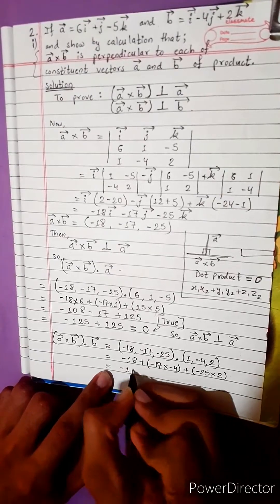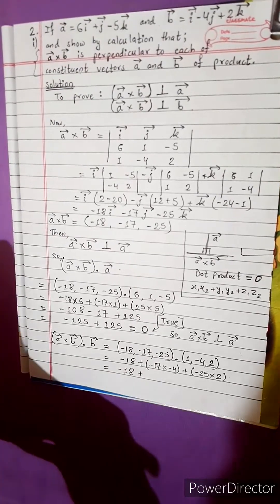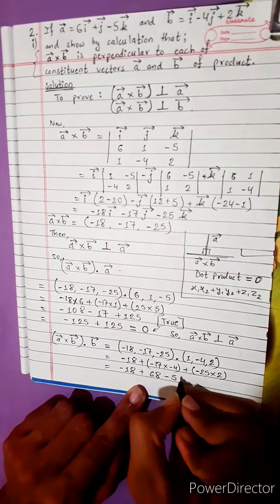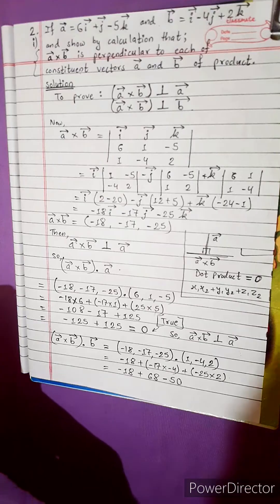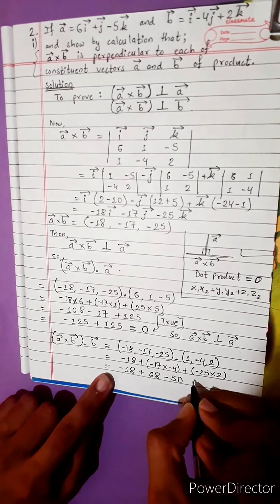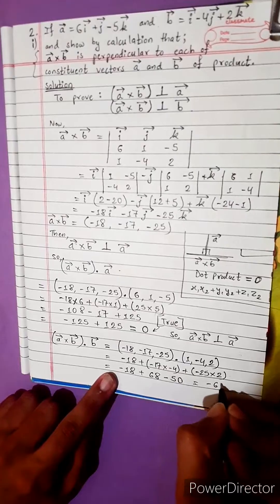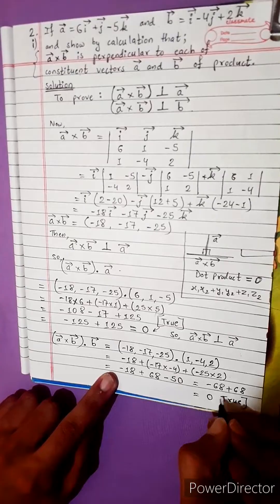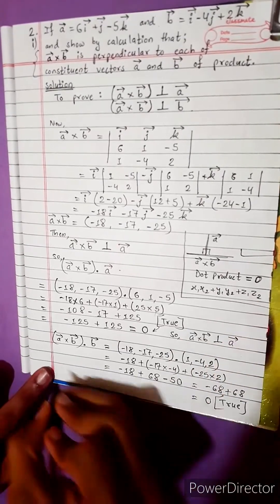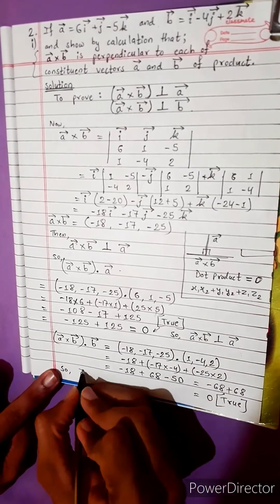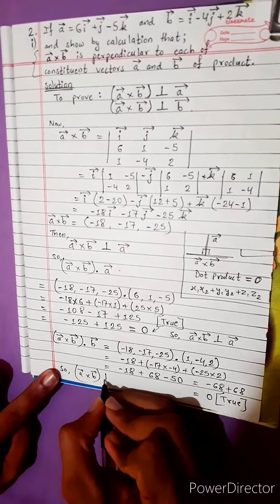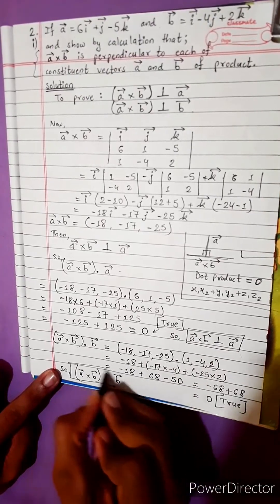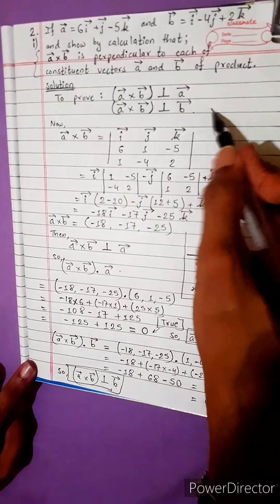This equals: minus 18, plus 68, minus 50. That is: minus 68 plus 68, equals 0. The condition is true. Dot product equals 0, so a vector cross product b vector is perpendicular to b vector. The condition is satisfied.